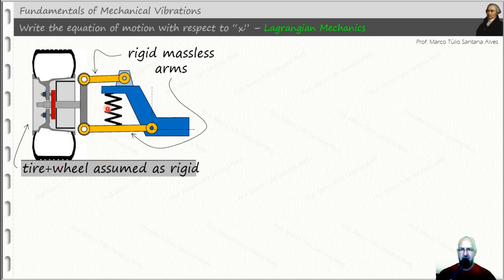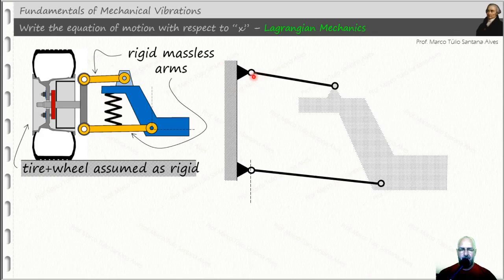And both these arms here are rigid massless arms, and for this reason we have an actual position here. We are assuming both these points, these joints, as fixed joints.